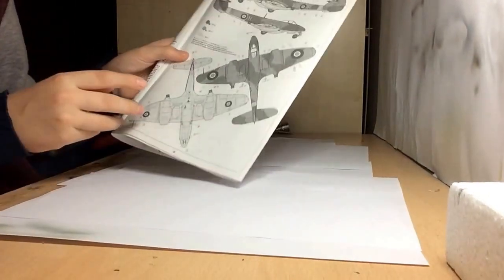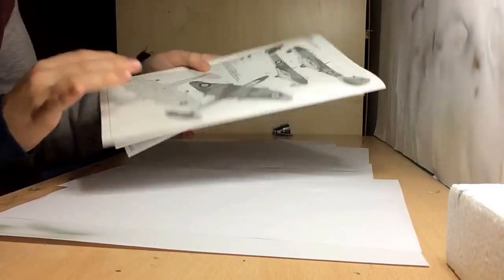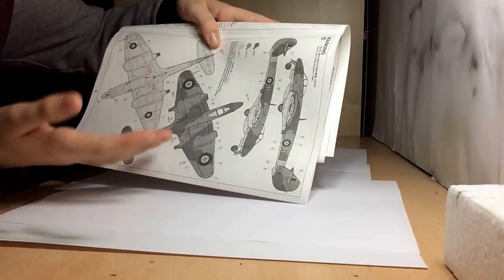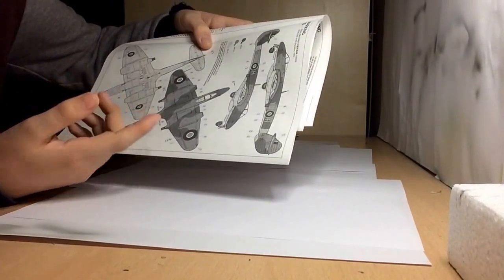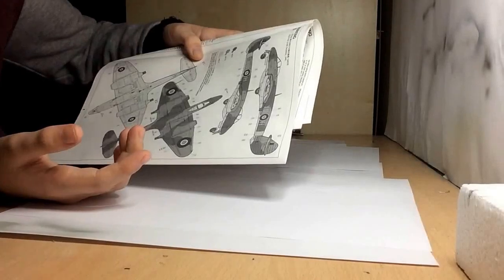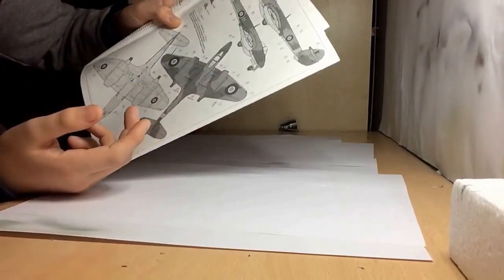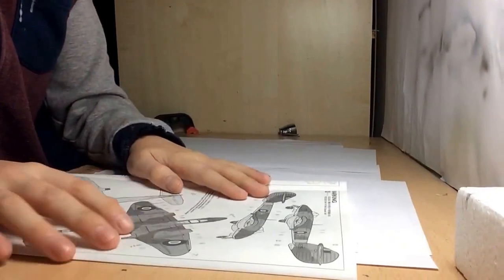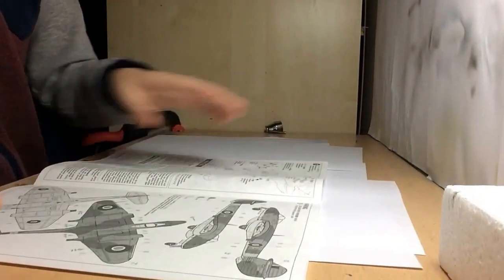But yeah, here we have the paint callouts, well the sheet where it tells you what paints and everything. Decal sheet I'll call it, well not decal sheet, I don't know what it's actually called, but just the things, it just says information on it and what paints you're going to paint it in.